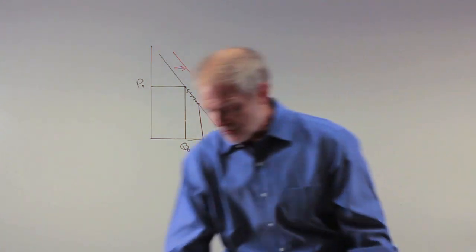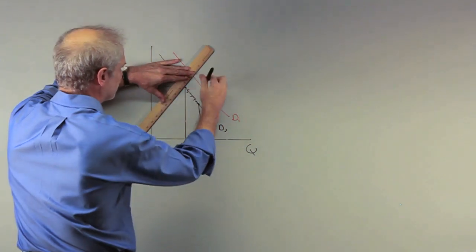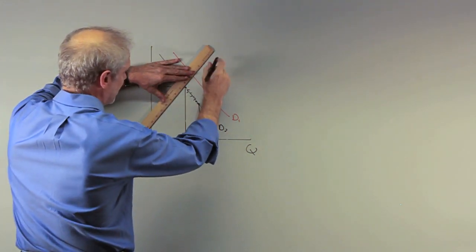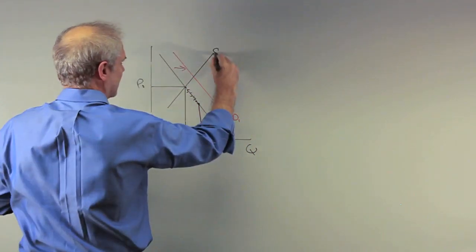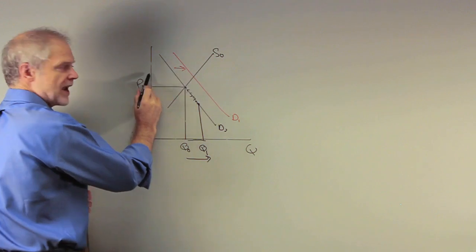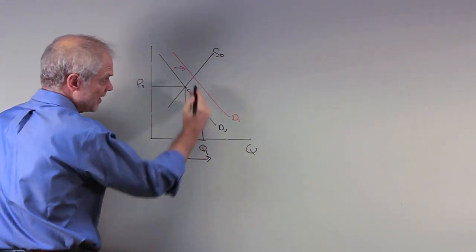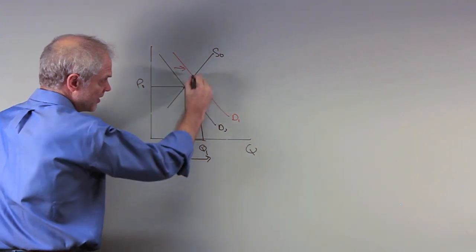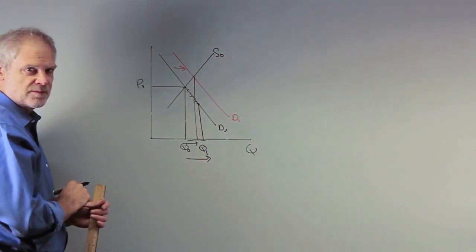And the reason this becomes important, the reason why I kind of pound away at it, is because now if I were to draw a supply curve in here, let's say I draw a supply curve here at S0. The increase in demand would unambiguously raise the price. Now you get an equilibrium quantity increasing from here to something like this. That's true, but it's going to be associated with an increase in price.